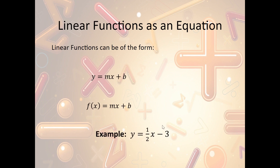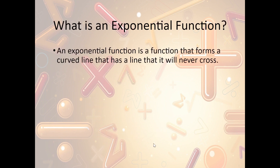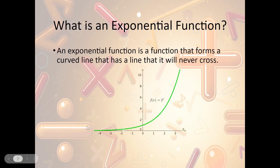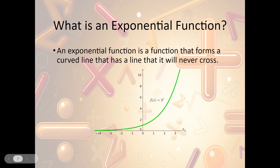Now, what is an exponential function? An exponential function is a function that forms a curved line that has a line it will never cross. For instance, it's a curved line — a single curve — that starts low and works its way up, or could go the other direction, start high and work down. Notice this line gets really flat near the x-axis and will never cross the x-axis. There's a line it will never cross. In this direction it will keep going and get really steep.